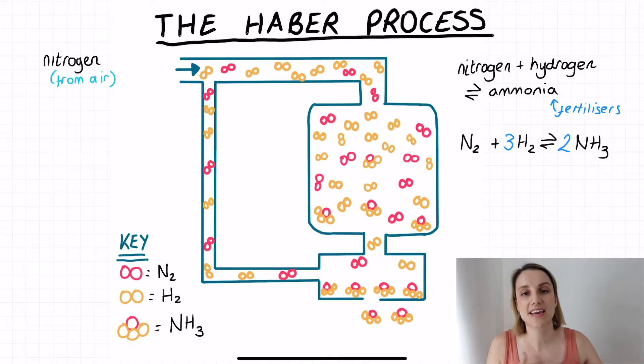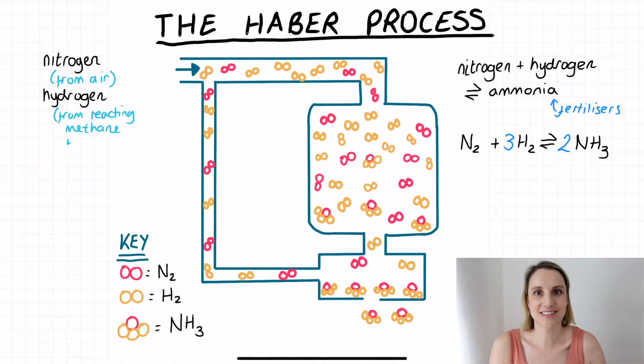At the top left here is the entrance for our starting materials which is our nitrogen and the hydrogen. Nitrogen we get mostly from the air because the air is made of 78% nitrogen. The hydrogen we get from the reaction between methane and steam which you learn more about in your organic chemistry module.